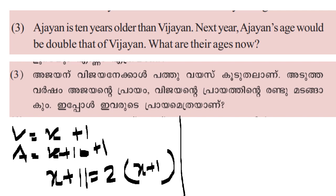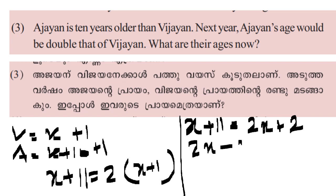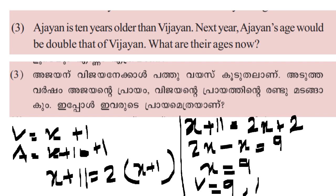Now we will open the bracket. x plus 11 is equal to 2x plus 2. Now, 2x minus x equals 11 minus 2, which equals 9. So x equals 9. Vijane's age is 9 and Ajane's age is 10 plus 9, which is 19. This is all done.